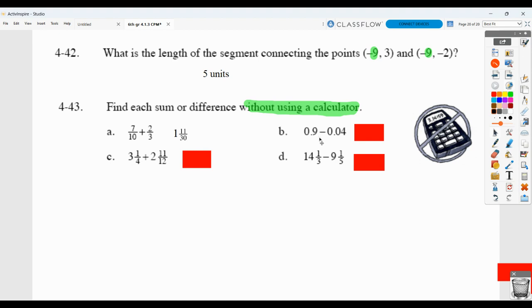Here, you should add a 0. And, show your regrouping or borrowing. 86 hundredths. Here, you need a common denominator of 12. So, 3 and 3 twelfths plus 2 and 11 twelfths, giving you 6 and 2 twelfths, which simplifies to 6 and 1 sixth.